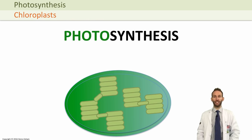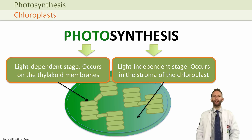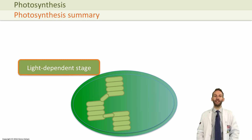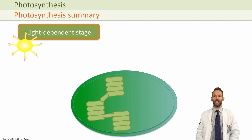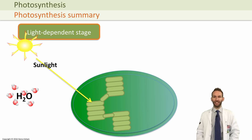The light-dependent stage of photosynthesis takes place on the thylakoid membranes — that's why so many are packed inside a chloroplast. The light-independent stage happens in the stroma. In the light-dependent stage, energy from the Sun hits chlorophyll in the thylakoid membranes and water is split, releasing oxygen as a waste gas.